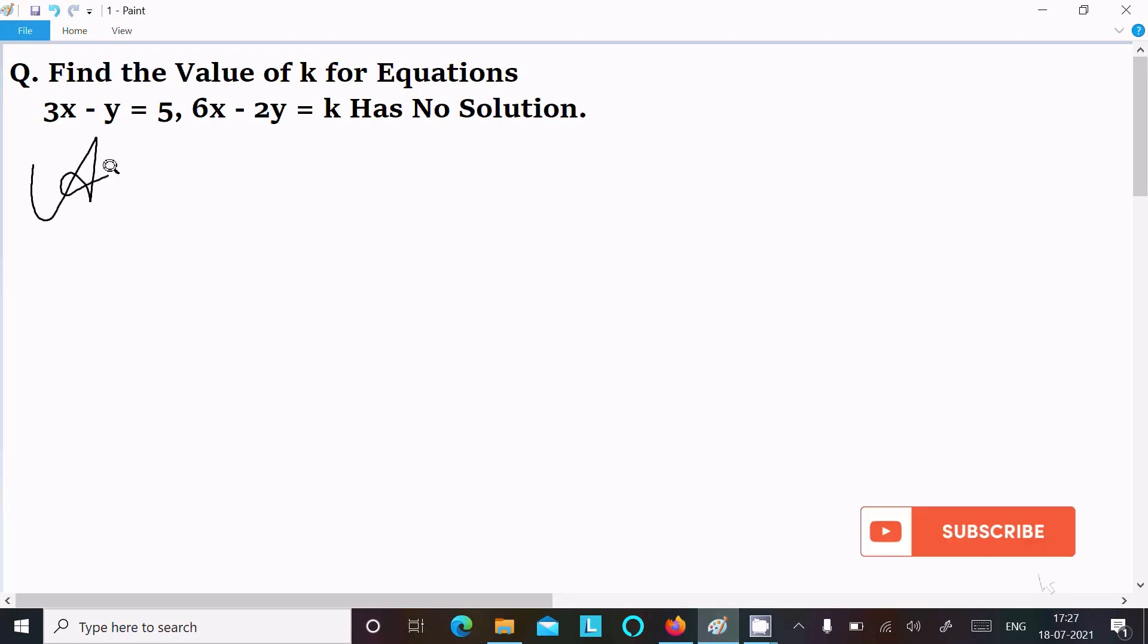So let's see the answer. First, I am writing the given equation: 3x minus y, and move the 5 to the left side, so it becomes minus 5 equal to 0.